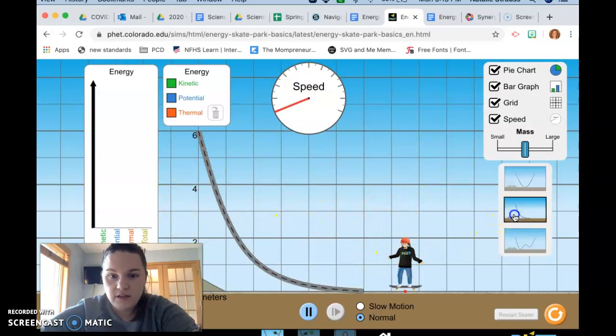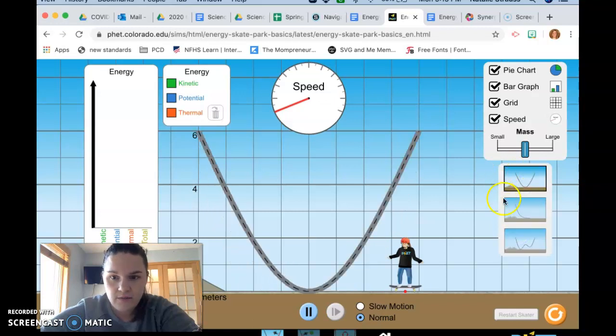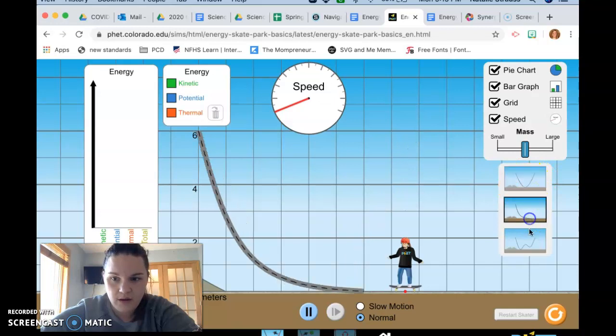We can change the path here that our skater would go on. For most of the simulation, you really just need this path, but you can play around with these other two as well.